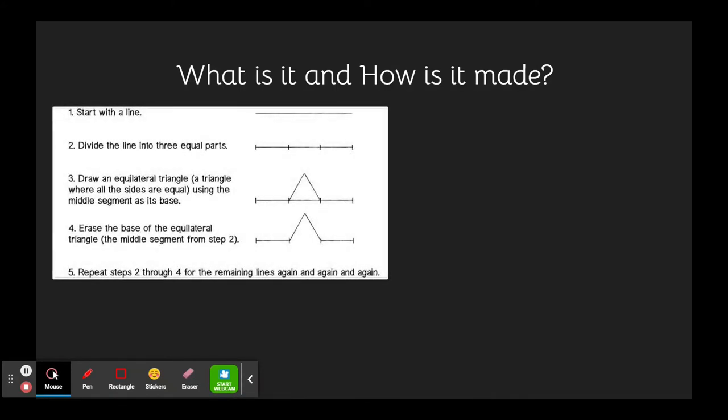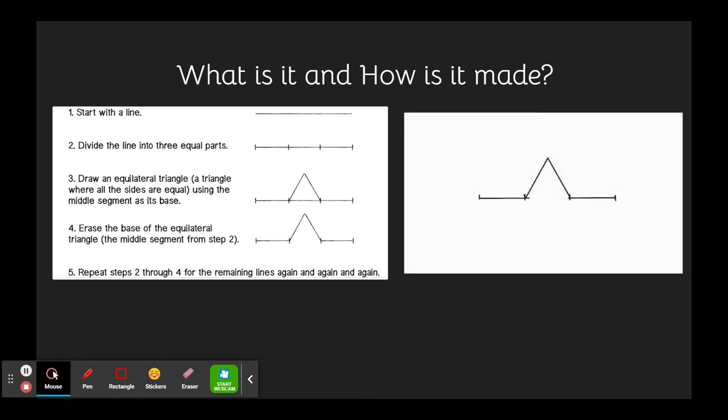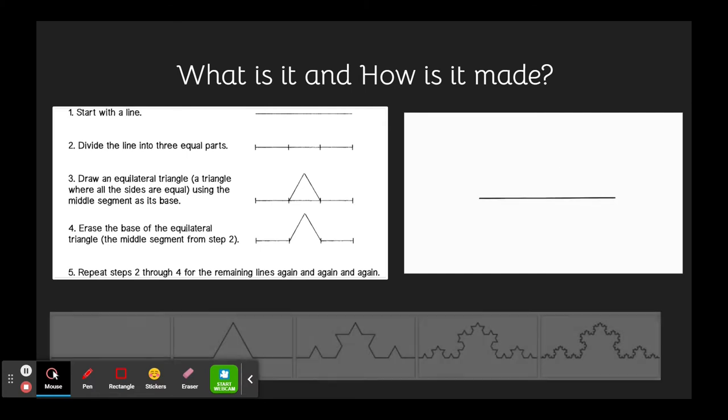How is the Koch line made? Like shown on the screen, it starts with a straight line which is divided into three equal parts, and an equilateral triangle is made in the middle. From that triangle, more triangles are made, branching off.